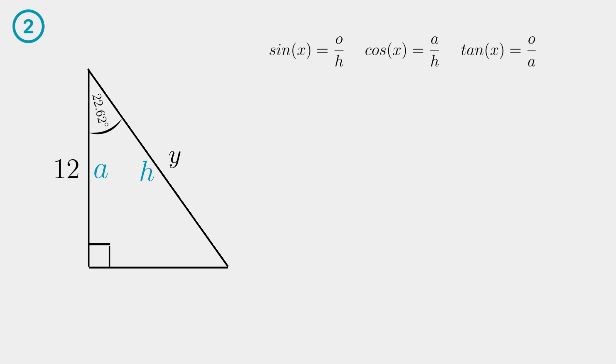We have an A and an H so we can use the cosine function. Plug your values into the formula. A quick way of isolating the Y is to make Y equal to twelve over cosine of twenty two point six two.